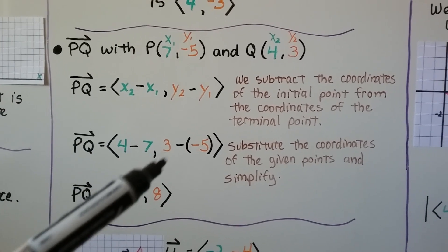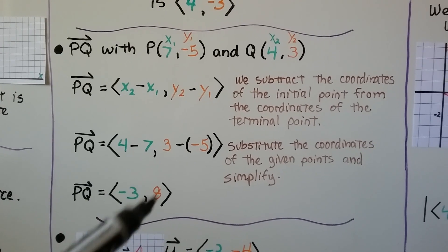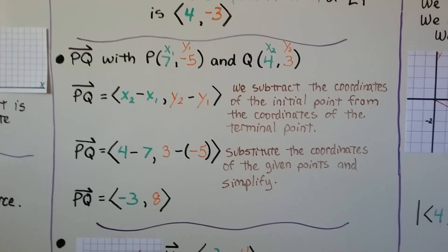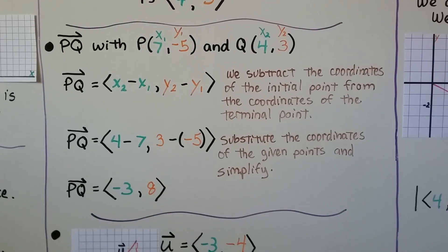Now we can simplify it. 4 minus 7 is a negative 3. 3 minus negative 5, we add the opposite, we get a positive 8. So vector PQ would be negative 3, 8.